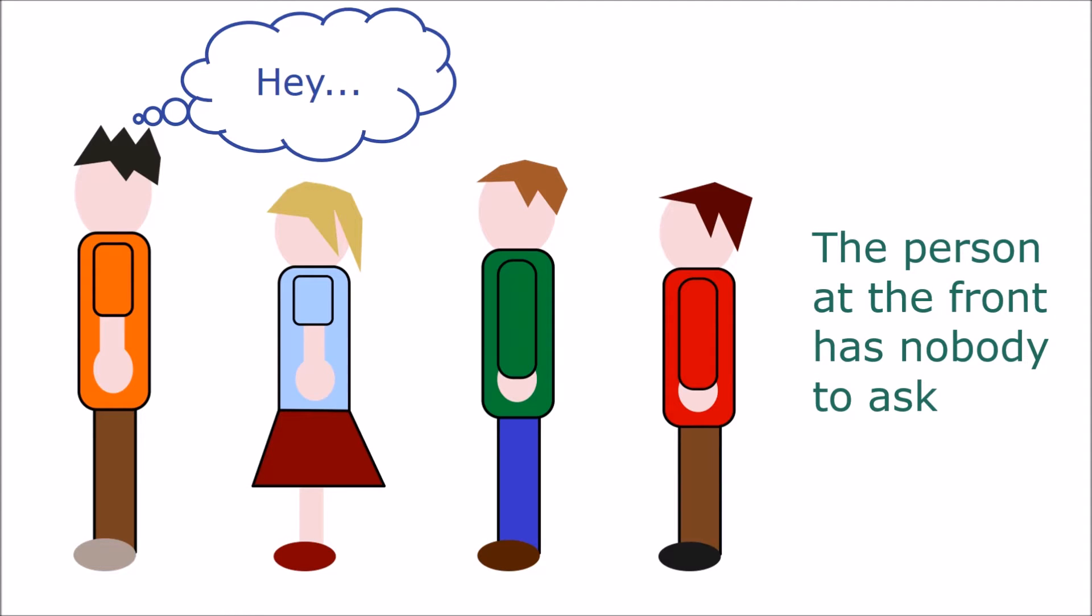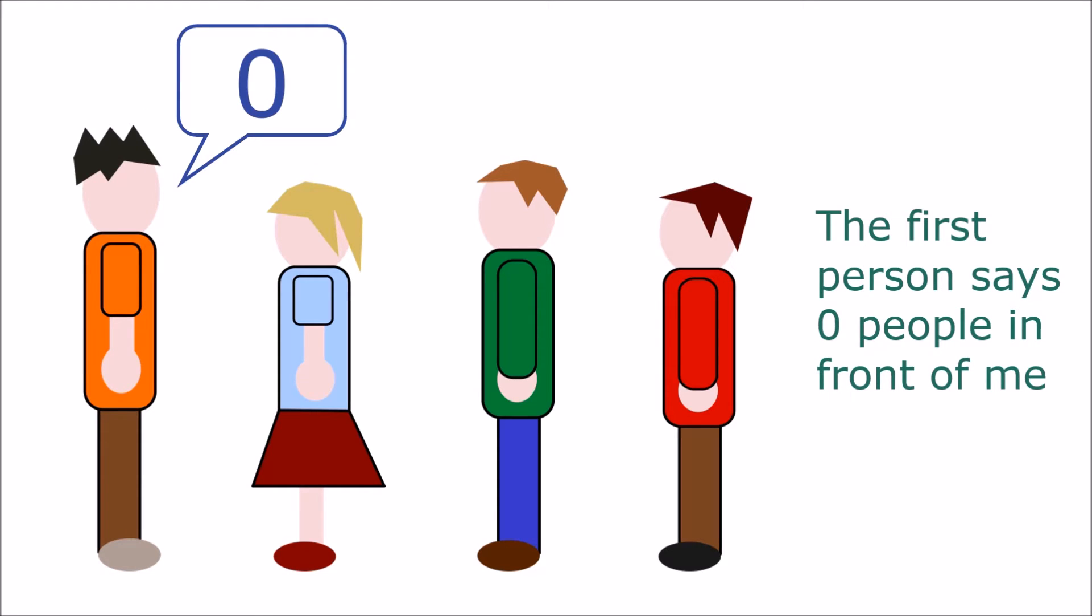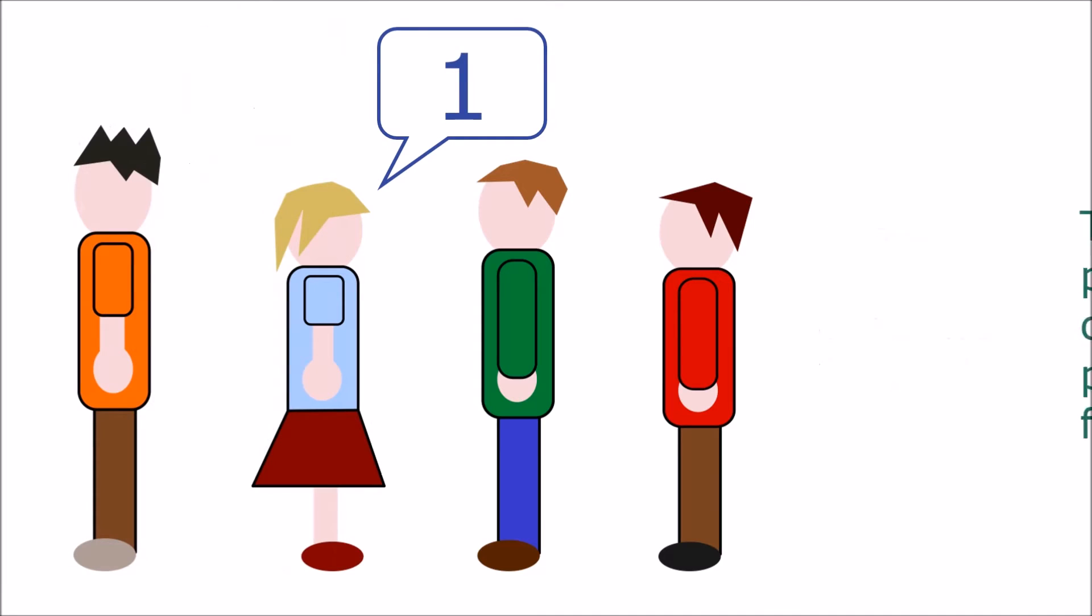The person at the front replies to the person behind, saying there are no people in front of me. So that person knows there is only one person in front of them, and they tell the person behind.